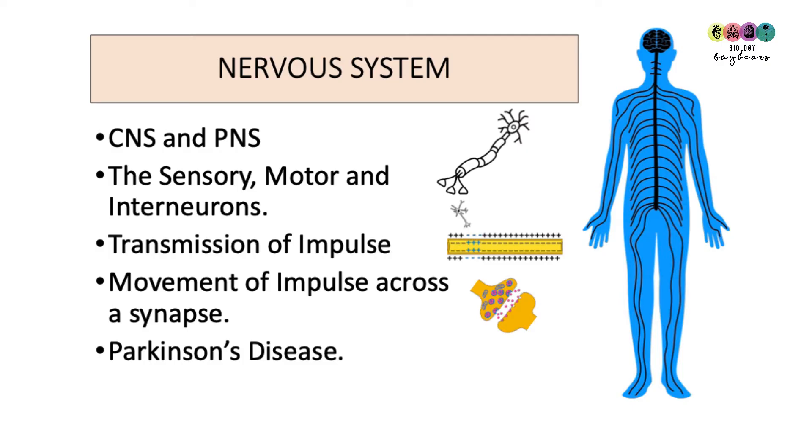You should be able to distinguish between the central nervous system and the peripheral nervous system. You should be able to draw and label good diagrams of each of the three neurons, give an account of how the impulse is generated and transferred by the movement of ions, discuss in detail how the impulse travels across a synapse, and give an account of Parkinson's disease, what causes it, the symptoms and how to treat it.